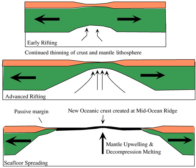Passive margins are found at every ocean and continent boundary that is not marked by a strike-slip fault or a subduction zone. Passive margins define the region around the Atlantic Ocean, Arctic Ocean, and Western Indian Ocean, and define the entire coasts of Africa, Greenland, India and Australia. They are also found on the east coast of North America and South America, in Western Europe and most of Antarctica. East Asia also contains some passive margins.